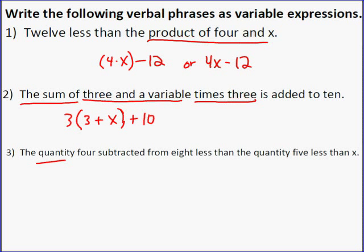The last one, the quantity four subtracted from eight, less than the quantity five less than x. Quantity means parentheses. Four subtracted from eight means 8 minus 4, subtracted from means you take the four after the eight. Less than the quantity, so the other parentheses, quantity five less than x, which is x minus 5.